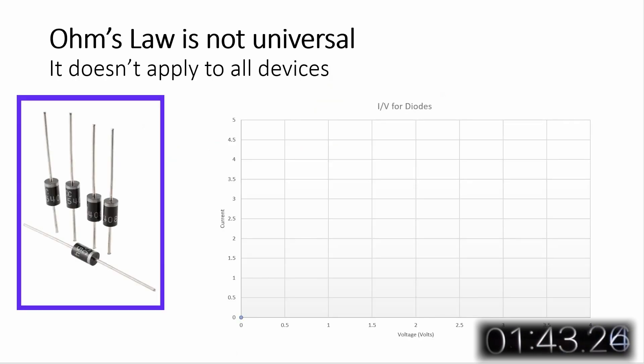I should note that Ohm's Law is not universal. Not all devices or materials have a linear relationship between voltage and current. Semiconductor devices do not, and diodes are the best example of this. Current through a diode increases exponentially with voltage across the diode.